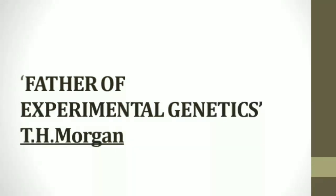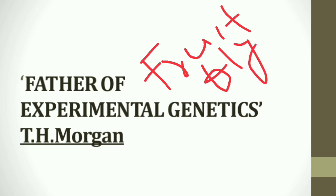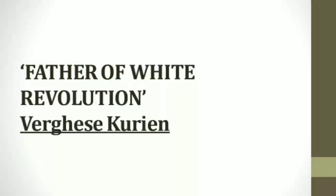Father of experimental genetics: T.H. Morgan is regarded as the father of experimental genetics, and he used Drosophila, or fruit fly, as the genetic material. Moving on to the next slide: father of white revolution is Varghese Kurien — he is a very popular name.